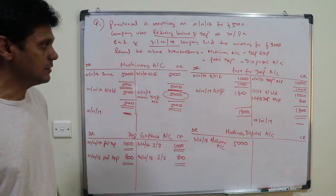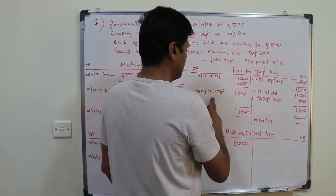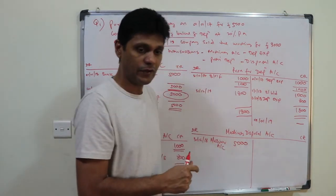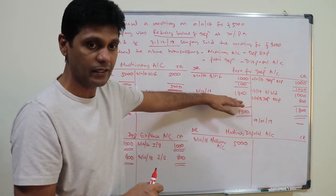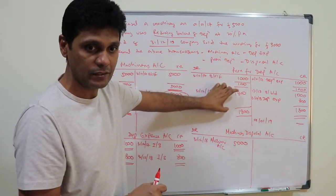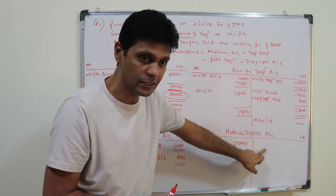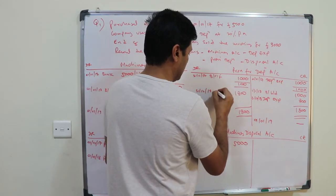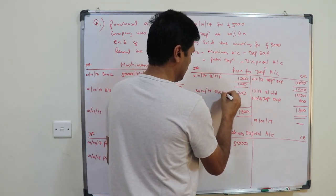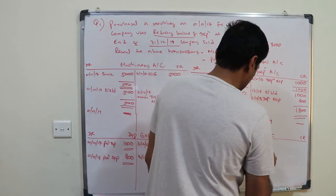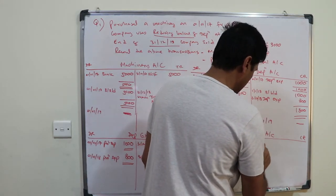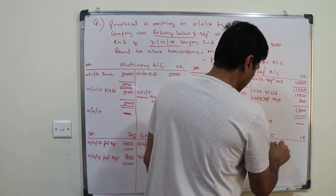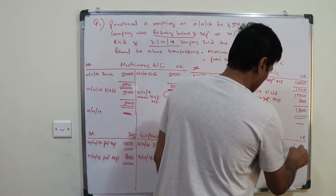Likewise, do not carry forward the provision account. Transfer the cumulative provision for depreciation — which is one thousand plus eight hundred, totalling one thousand eight hundred — to the disposal account. Credit the disposal account and debit the provision for depreciation account one thousand eight hundred on 31st December 2018.